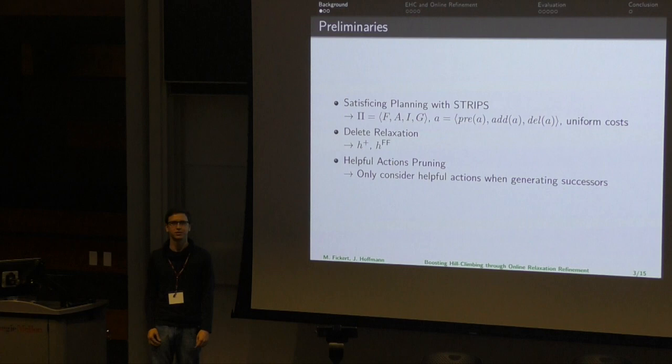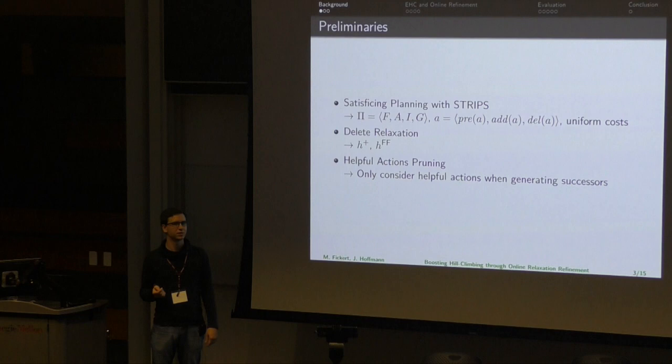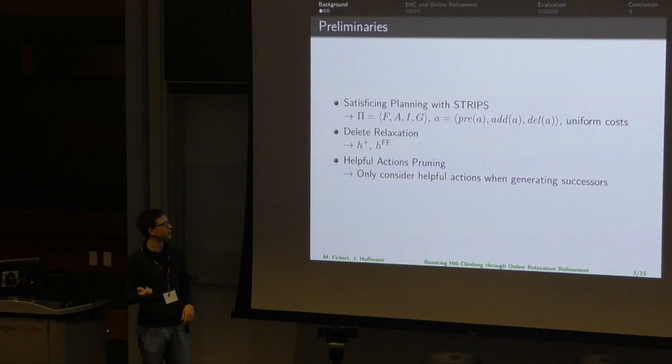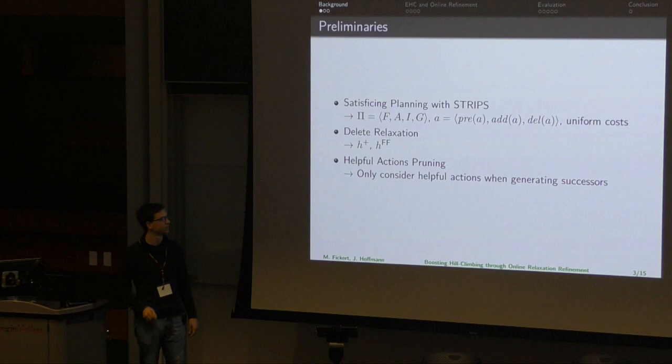We're doing classical planning with STRIPS. We're going to need the delete relaxation. H+ gives the length of an optimal delete-relaxed plan, and HFF gives the length of any relaxed plan. We're going to do helpful action pruning, which was used in FF and fast hill climbing, where you only consider successors reached through actions deemed useful by the heuristic — specifically, actions that occur in the delete-relaxed plan and are applicable in the current state.